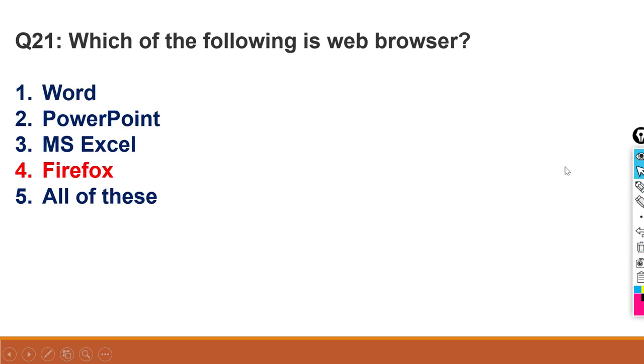Which of the following is a web browser? This will also be eliminated. Word, PowerPoint, MS Excel - these are your application software. Firefox is your web browser, where you browse and search.